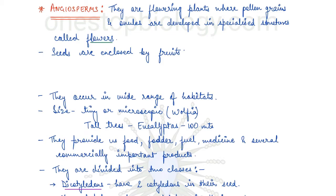Welcome back to One Stop Biology. Today we are going to start with angiosperms. We have covered Class 11 NCERT Chapter 1 and Chapter 2 in previous videos, and we are now at Chapter 3, where we have covered the entire plant kingdom apart from angiosperms.